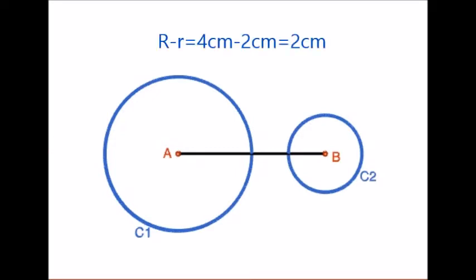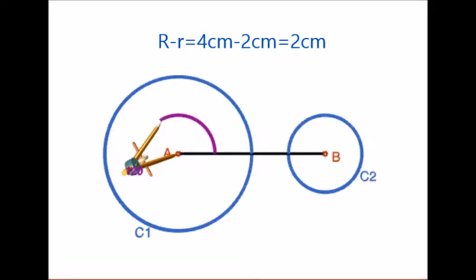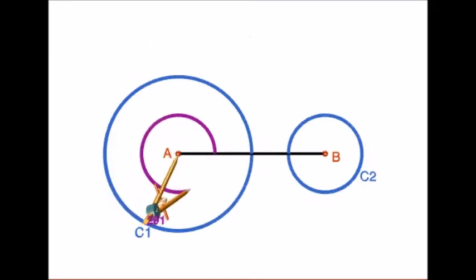Here we are constructing a direct common tangent, so both the radii mentioned in the data should be subtracted. Therefore, 4 cm minus 2 cm gives 2 cm. With radius equal to 2 cm and center A, draw a circle — call it C3.